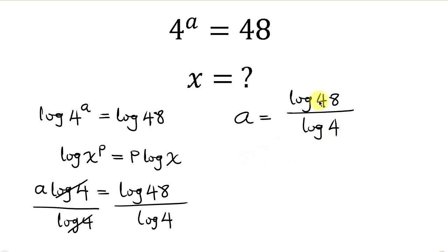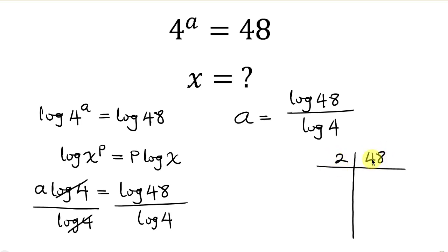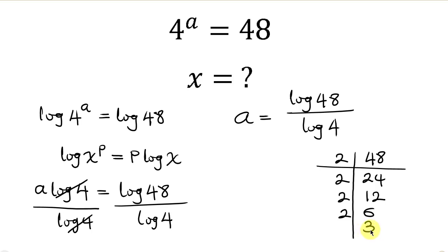Now our next step will be to break down 48. So this is 48: 48 divided by 2 gives 24. 24 divided by 2 gives 12. 12 divided by 2 gives 6. 6 divided by 2 is 3, and 3 divided by 3 is 1.